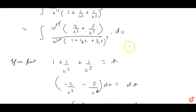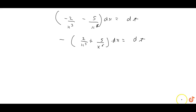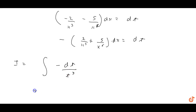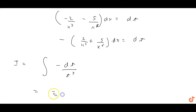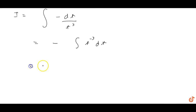The numerator is exactly what we got from dt, so the integral becomes -∫ dt/t^3, which equals -∫ t^{-3} dt. Integrating: -[t^{-3+1} / (-3+1)] = -[t^{-2} / (-2)].